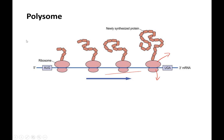We looked at this image in class. A polysome just means many ribosomes. One mRNA can have multiple ribosomes translating at the same time, so you can have multiple proteins being expressed.